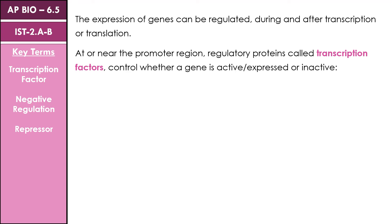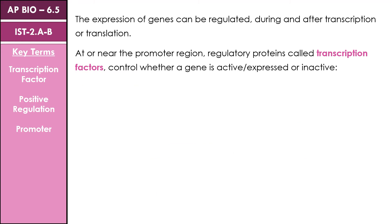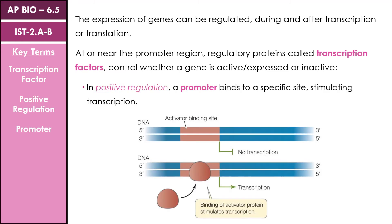We have a couple of different regulatory mechanisms. One of these is negative regulation, where we have a protein called a repressor which binds to the regulatory sequence and prevents the binding of RNA polymerase, so no transcription can occur. Comparing that to negative regulation, we also have positive regulation, which involves the binding of a promoter to that regulatory sequence, which gives RNA polymerase somewhere to bind and stimulates transcription.